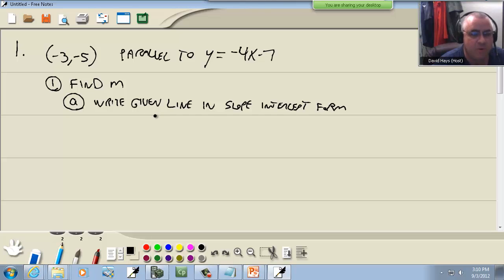I'm giving you the steps that should work 100% of the time. So this one's already solved for Y. Slope-intercept form is when you solve for Y. Our next sub-step is to identify the slope. If it's in slope-intercept form, your slope is the number for your X, which would be negative 4.